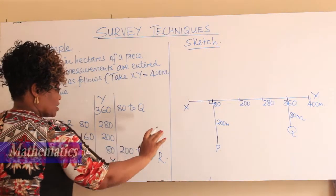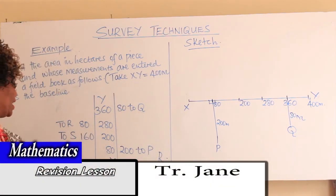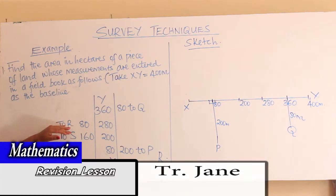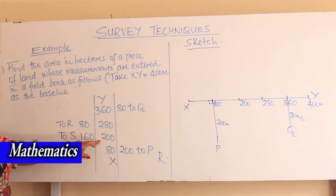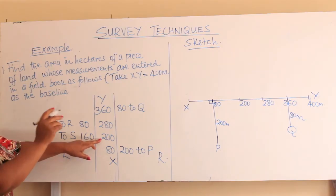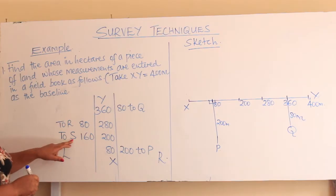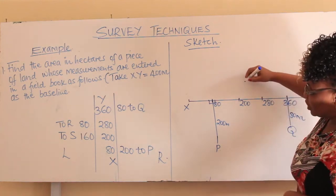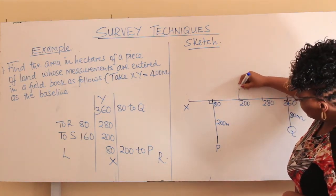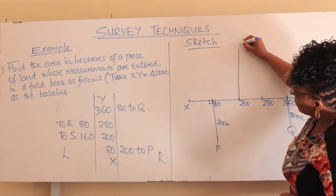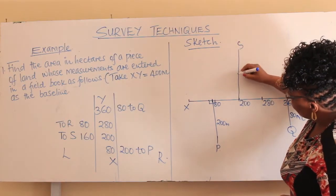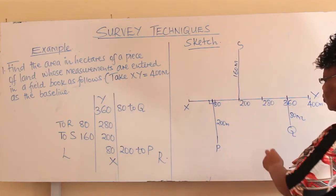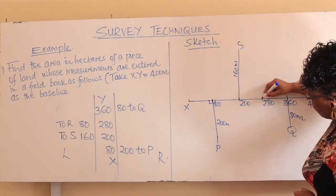The offsets to the left go above the line. At 200, there is an offset of 160 meters to S. So at 200 we have an offset of 160 going upward — you come and write 160 meters to S. You go to 280; there you have another offset, a shorter one of 80.